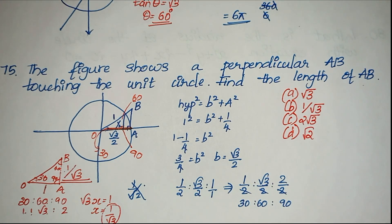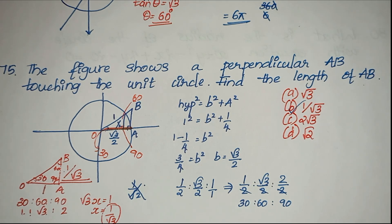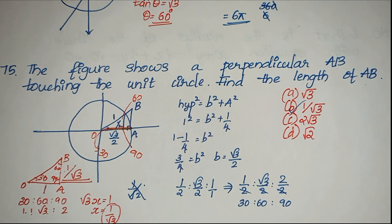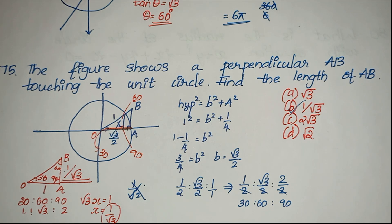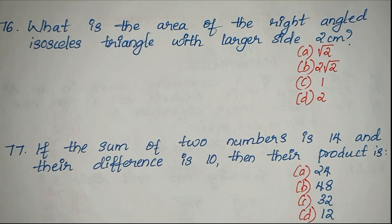If you want to see the right angle triangle, you need to review the rules for the 30-60-90 triangle and then apply that rule. If you have any questions, you will be able to answer them. Please comment in the comment box. Now let's go to question number 76.